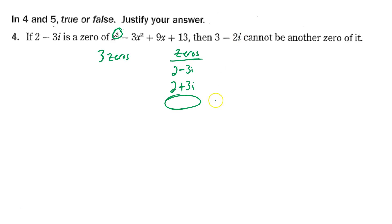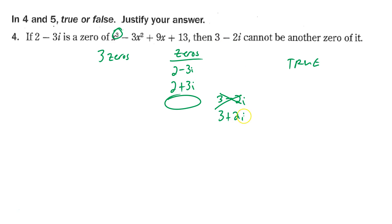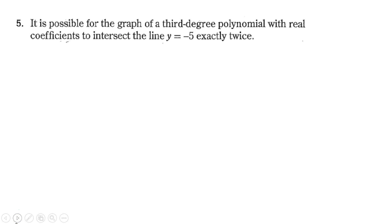We only have one more zero left. If 3-2i were also a zero, then because of real coefficients 3+2i would also have to be a zero — but we only have room for one more. So 3-2i cannot be a zero; the statement is true. That last zero has to be a real number; it can't be complex because that would require a fourth zero in a degree-three polynomial.